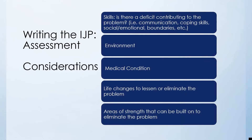There are also additional considerations when writing an IJP. A person may have skills or deficits that contribute to the problem, such as communication, coping skills, social, emotional, and boundaries. There may also be environmental factors, health care or medical conditions that impact the person's life, life changes that could lessen or eliminate the problem, and areas of strength that need to be built on to address current deficits.